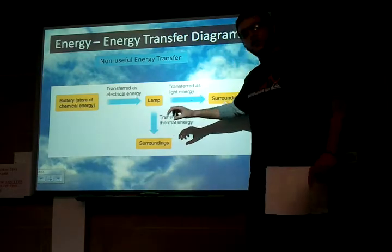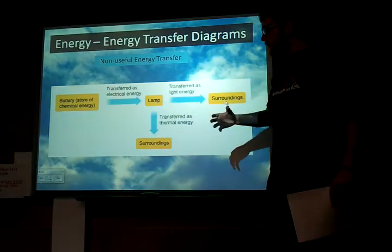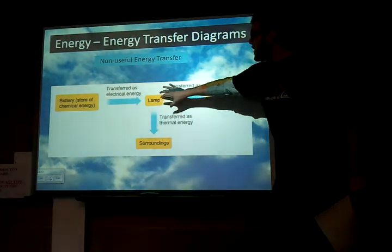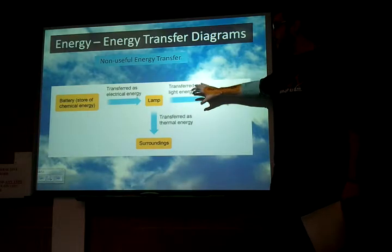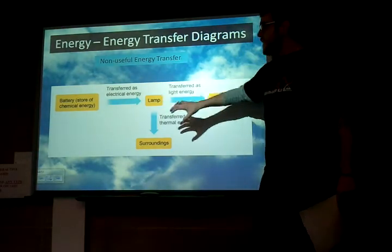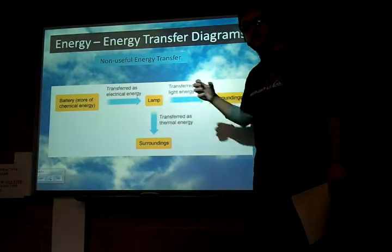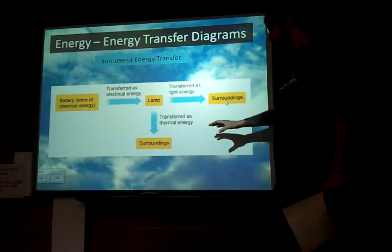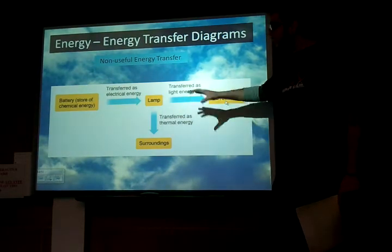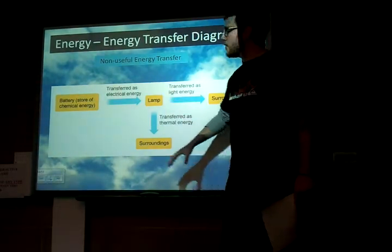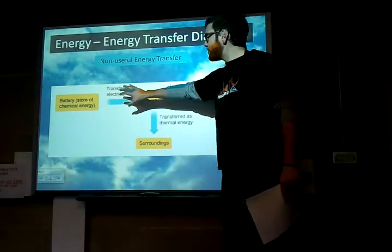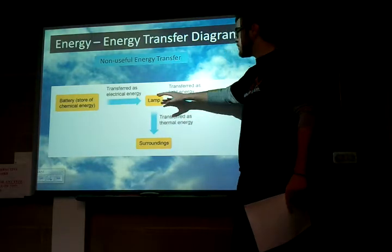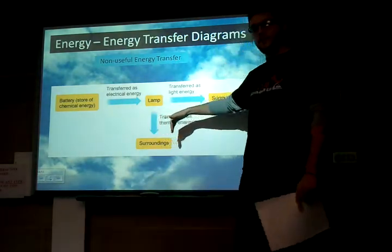This is not wasted energy — you can't destroy energy — but this is not what we actually want from the system. The more energy we can get transferred into light, the better the energy we're putting in is being used for what we actually want. So in this basic energy transfer diagram, we go from energy source being transferred into electrical energy, and then this is split into both useful and non-useful energy.